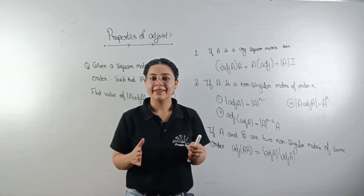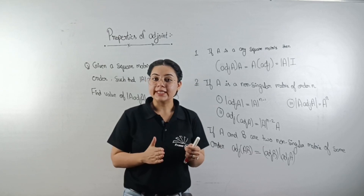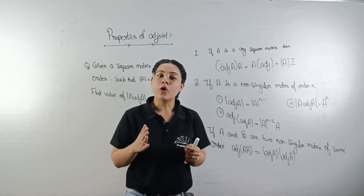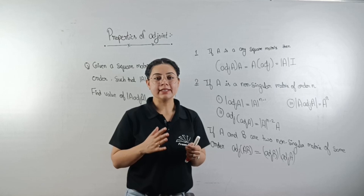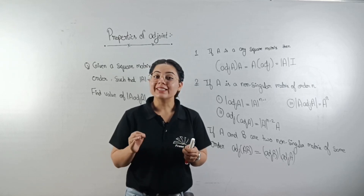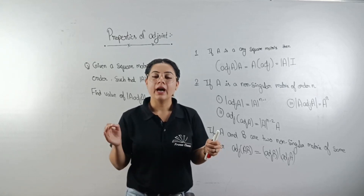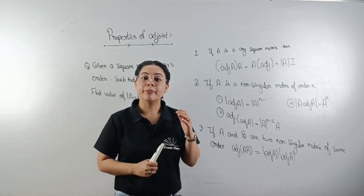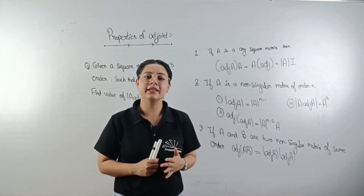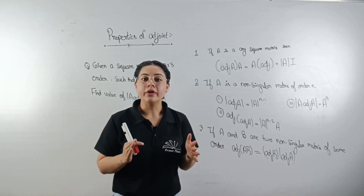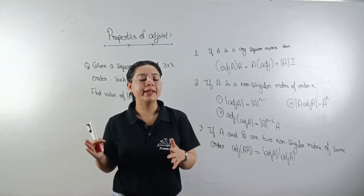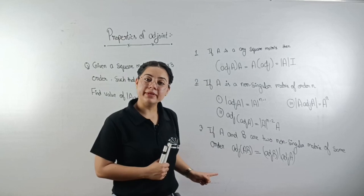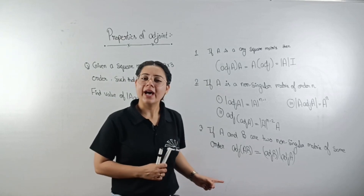Now we are going to learn about properties of adjoints. We have discussed earlier that these properties are very helpful — they will convert our questions into an easy form. So we have three properties of adjoints.